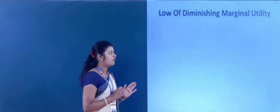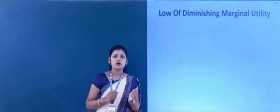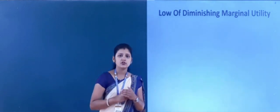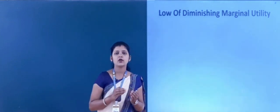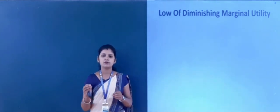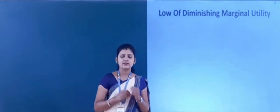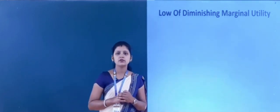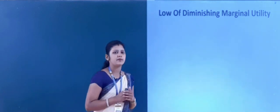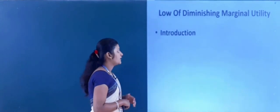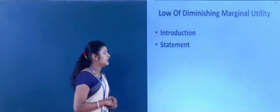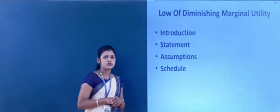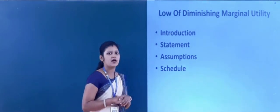The law of diminishing marginal utility is also called the cardinal utility approach because it assumes that utility can be measured in cardinal numbers like 1, 2, 3, 4, etc. That is why it is considered as the cardinal utility approach. In this class, we are going to study in detail about the law of diminishing marginal utility. We will look at the introduction of the law, then the statements, then the assumptions, and next the schedule that explains the law.